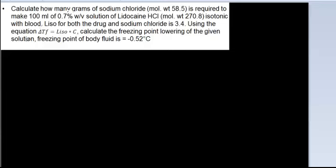Welcome to the lecture. Today we are going to calculate isotonic calculations and determine how many grams of sodium chloride is required to make 100 ml of a 0.7% weight by volume solution of lidocaine hydrochloride. The molecular weight is given, and the solution should be isotonic with the blood. The Liso value for both the drug and sodium chloride is 3.4, and the freezing point of body fluid is 0.52 degrees centigrade. We are going to do this step by step.